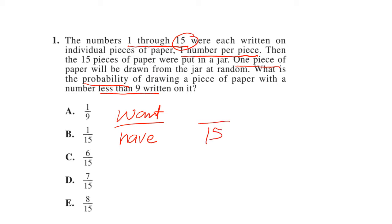We want a number that is less than 9, and that means we want a number 1 to 8. So there are 8 numbers less than 9. So 8 out of 15, so your answer is E.